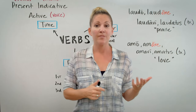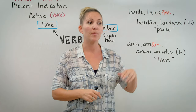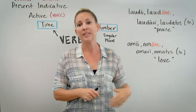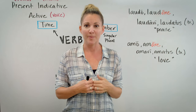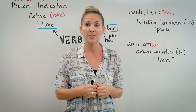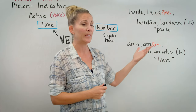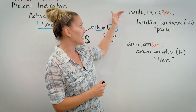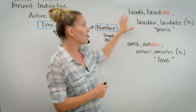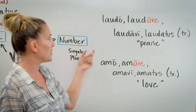In Latin, verbs belong to families called conjugations. Remember that nouns belong to families called declensions — very similarly, verbs belong to families called conjugations. We are introducing the first conjugation today. So when you see a Latin verb listed, you usually see four different forms of that verb, and these are called the four principal parts. I have two examples here.